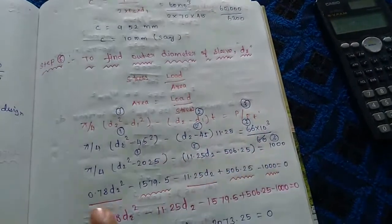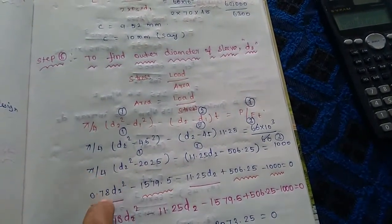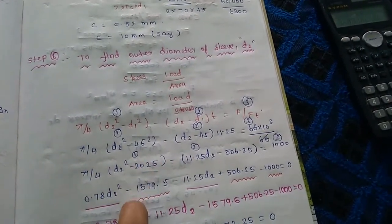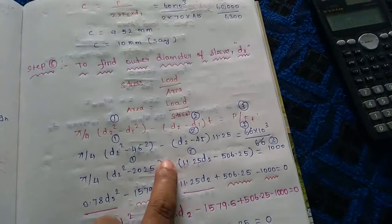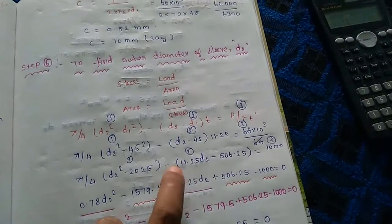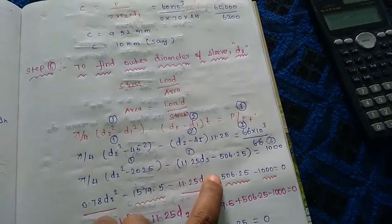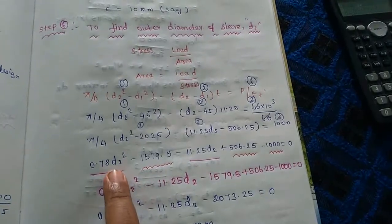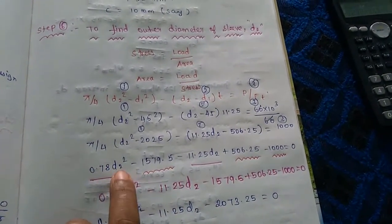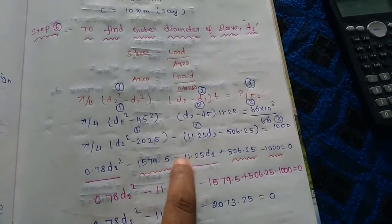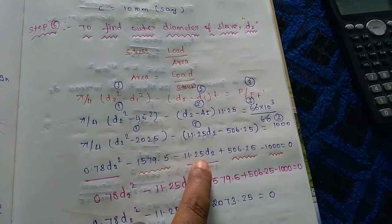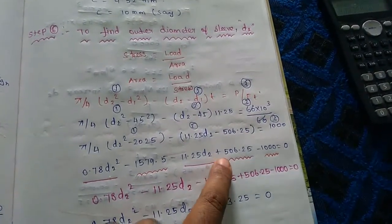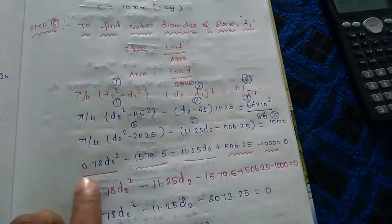That equals 10³. Simplifying: 0.78·d2² minus 0.78·(0.75·d2)² equals the load expression. After expanding, combining terms: 0.78·d2² minus the subtracted area gives a quadratic in d2. Writing the quadratic: a·d2² + b·d2 + c = 0 form. We can write line values and use the quadratic formula to solve.